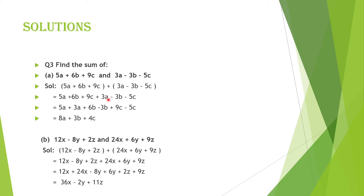Ab 6 terms hain: 5a plus 3a, plus 6b minus 3b, plus 9c minus 5c — like terms combine karen. 5a aur 3a dono plus hain: 5 aur 3 milake 8a. 6b mein se 3b: plus 3b. 9c mein se 5c: plus 4c. Final answer: 8a plus 3b plus 4c.